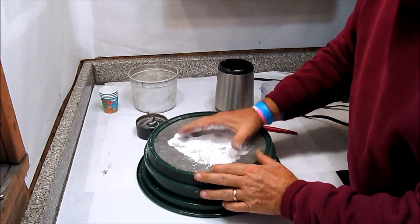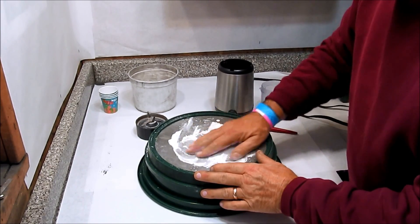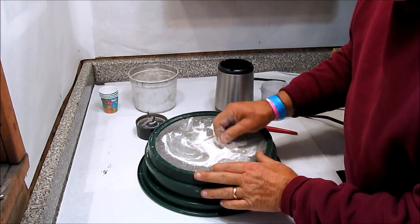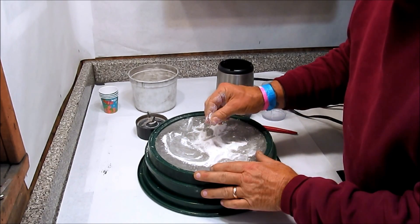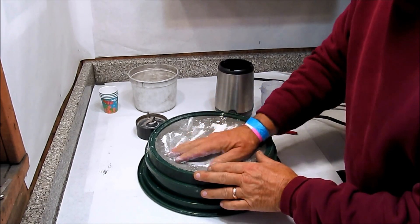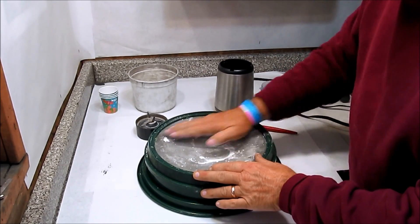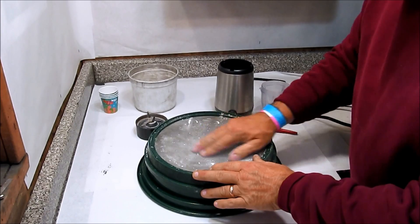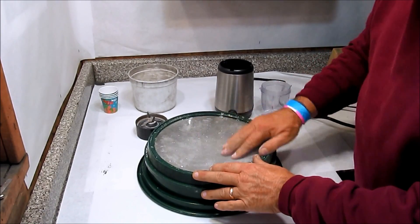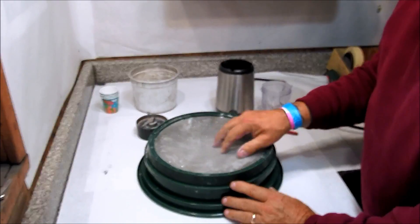Now this is all passing the 50 mesh screen very, very easily. I can feel just barely some little bits in there, but it's gotten into a pretty fine state. I can repeat that a few times to get as much milled potassium nitrate as I want.